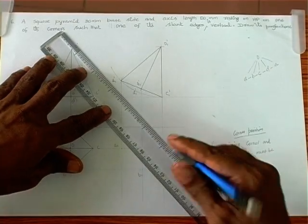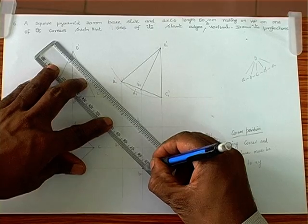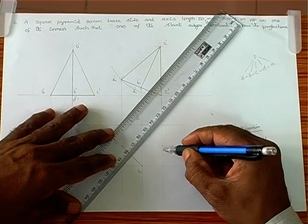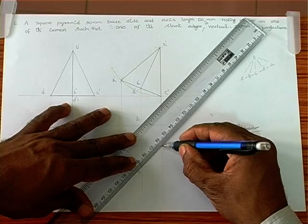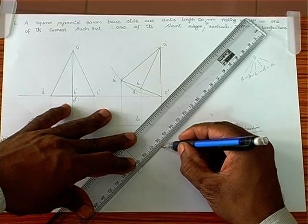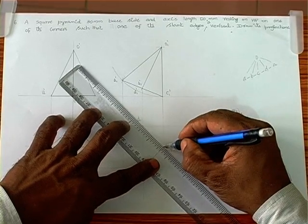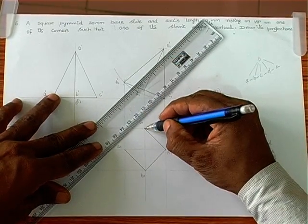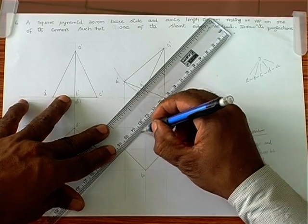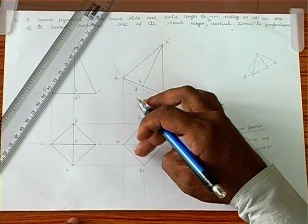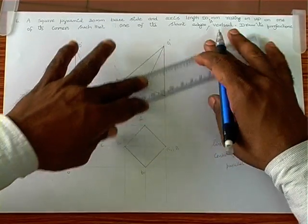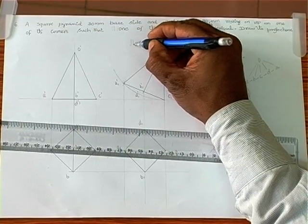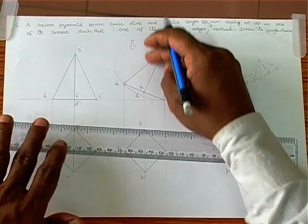We join AB — AB is possible. We join CD — CD is also possible. Then we join DA. Now we need to determine the dotted and dark lines. The procedure is simple: we place one downward arrow and view from the top to see the visibility of the top view.